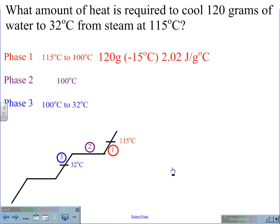In this case, 120 grams times a negative change of 15 degrees Celsius times the specific heat capacity of steam, 2.02 joules per gram, gives us a value of negative 3,636 joules.